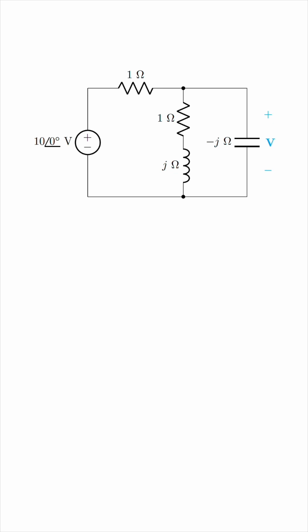I'm going to combine this parallel chunk into a single impedance Z parallel. We have the resistor in series with the inductor, all in parallel with the capacitor. So, we have 1 plus J times negative J over 1 plus J plus negative J. The denominator simplifies to 1, and then we'll expand the top, giving us 1 minus J. Remember, J times itself is negative 1.